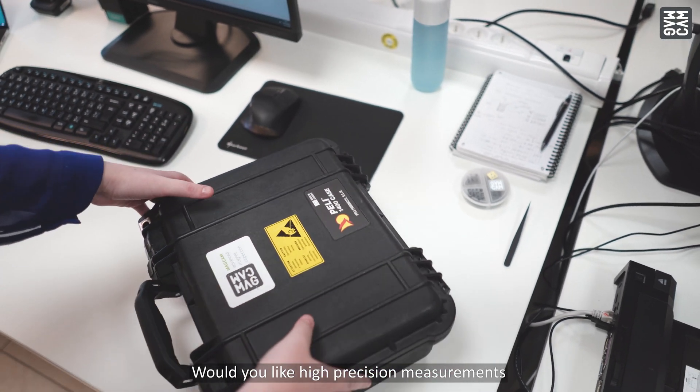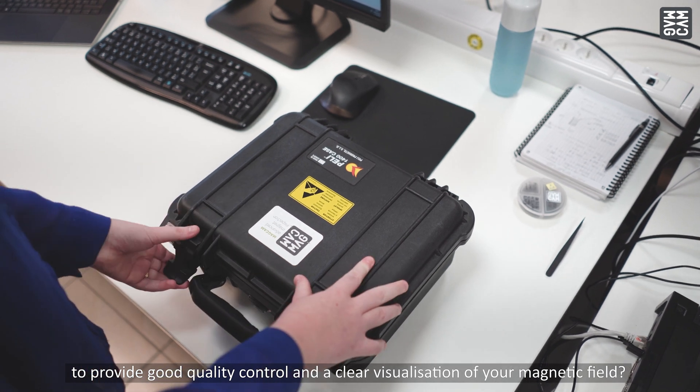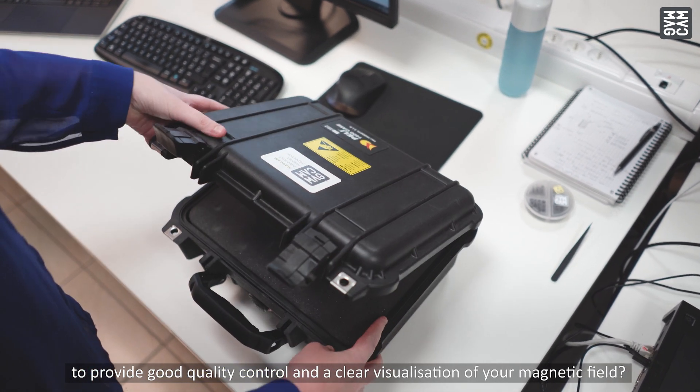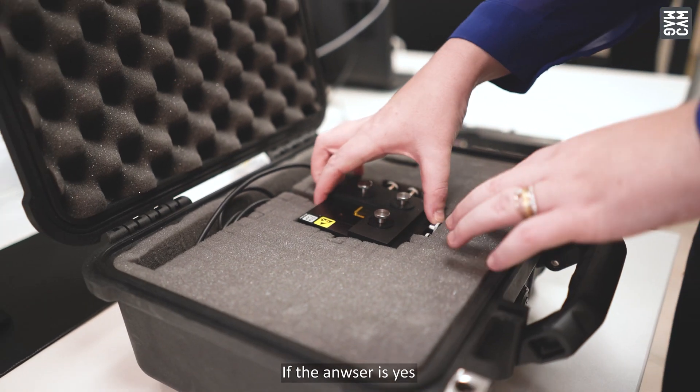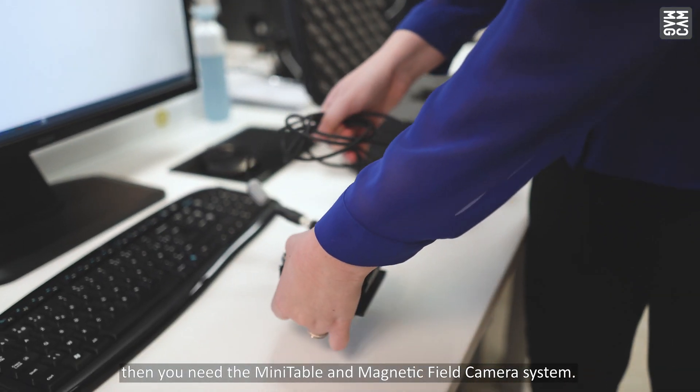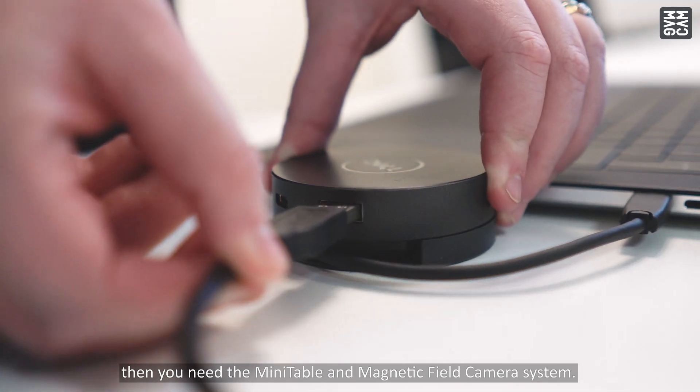Would you like high precision measurements to provide good quality control and a clear visualization of your magnetic field? If the answer is yes, then you need the mini table and magnetic field camera system.